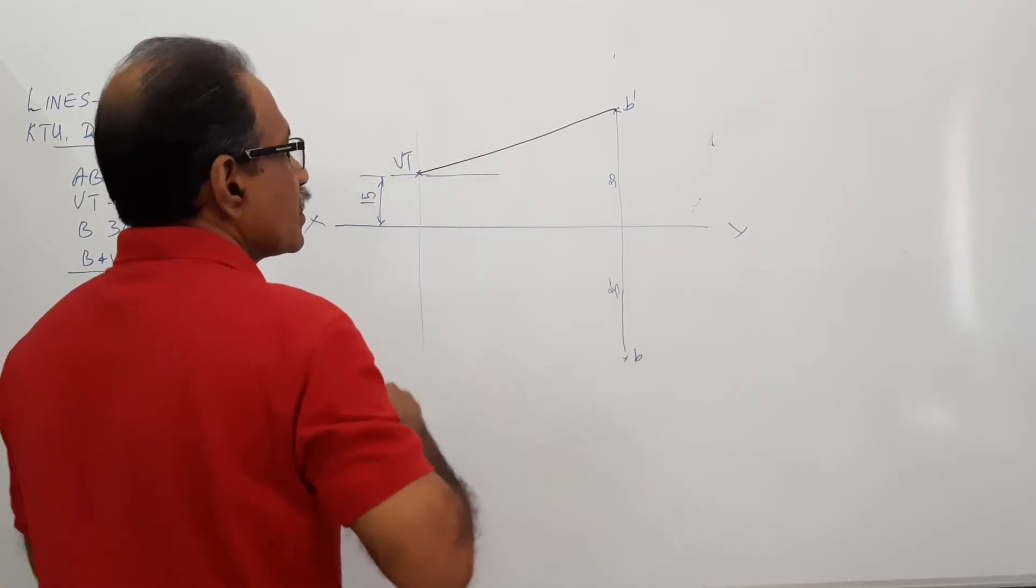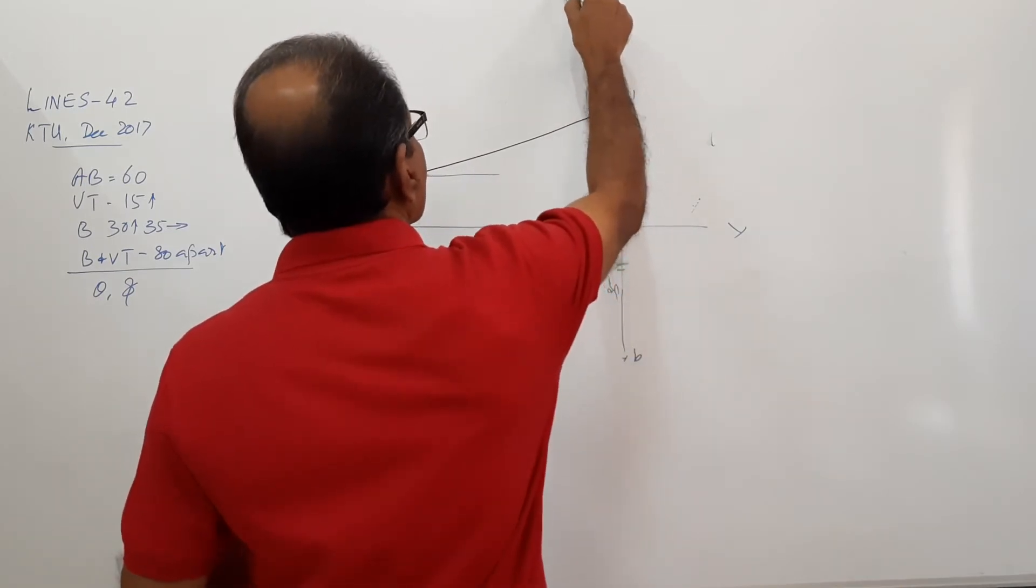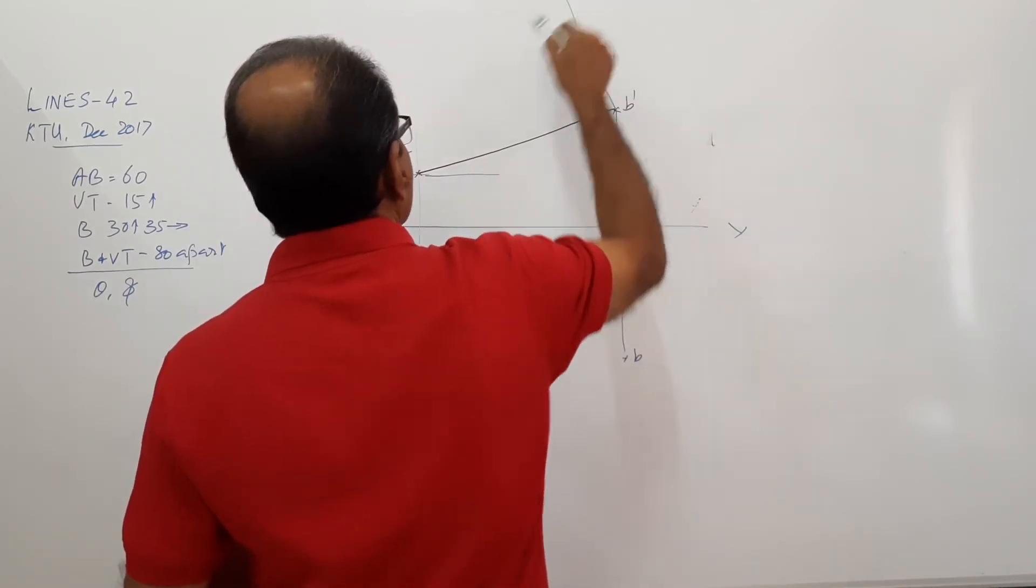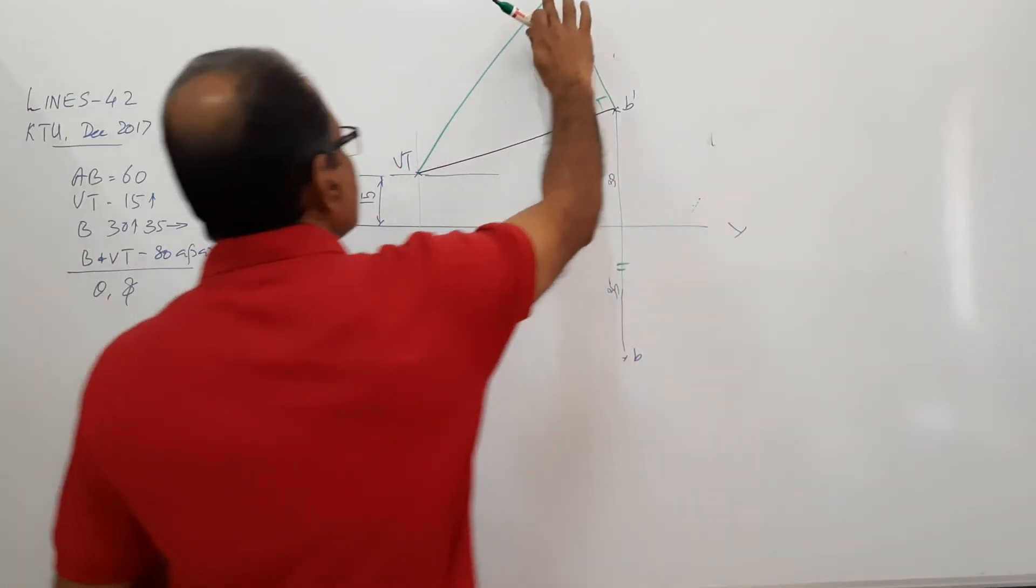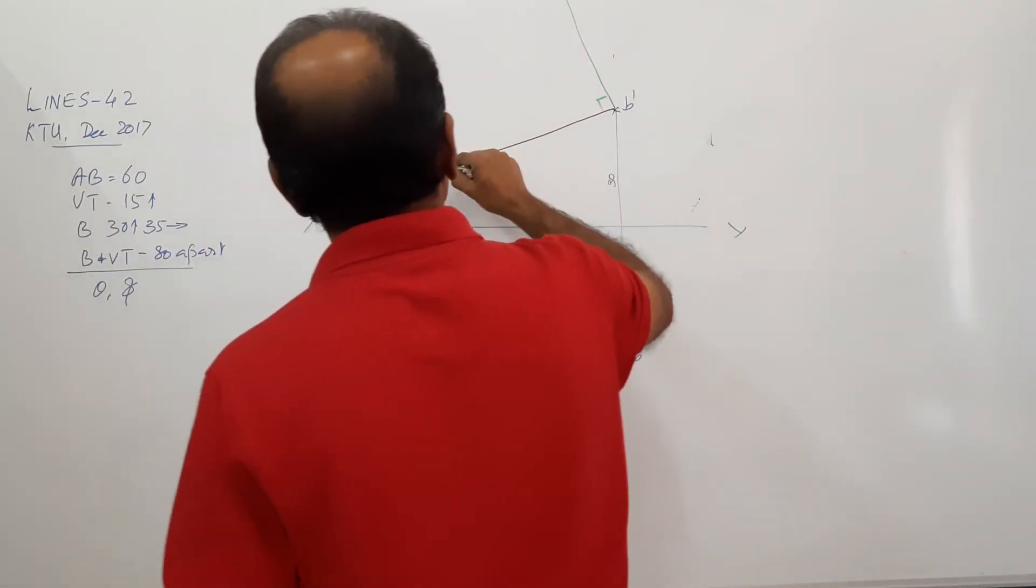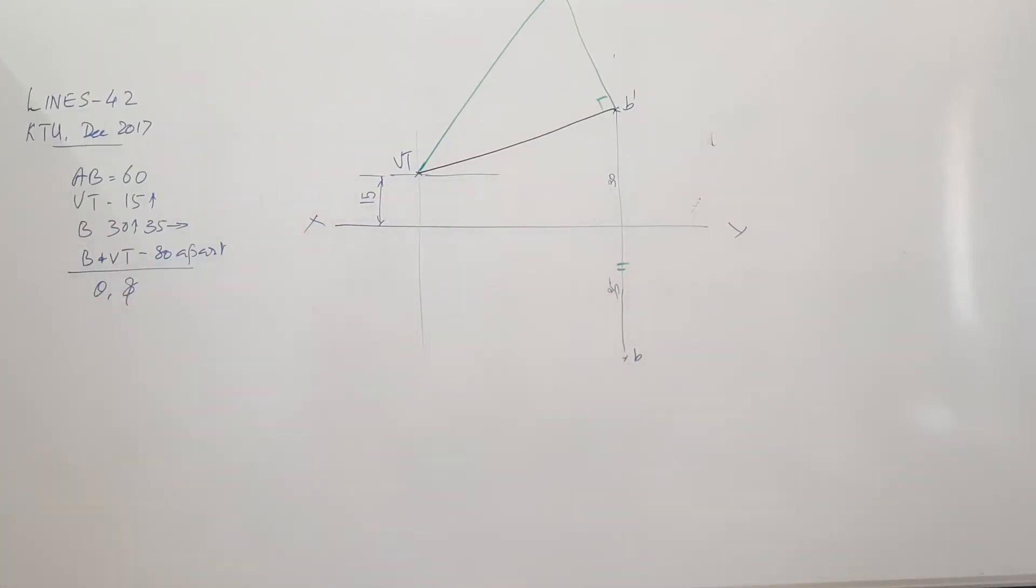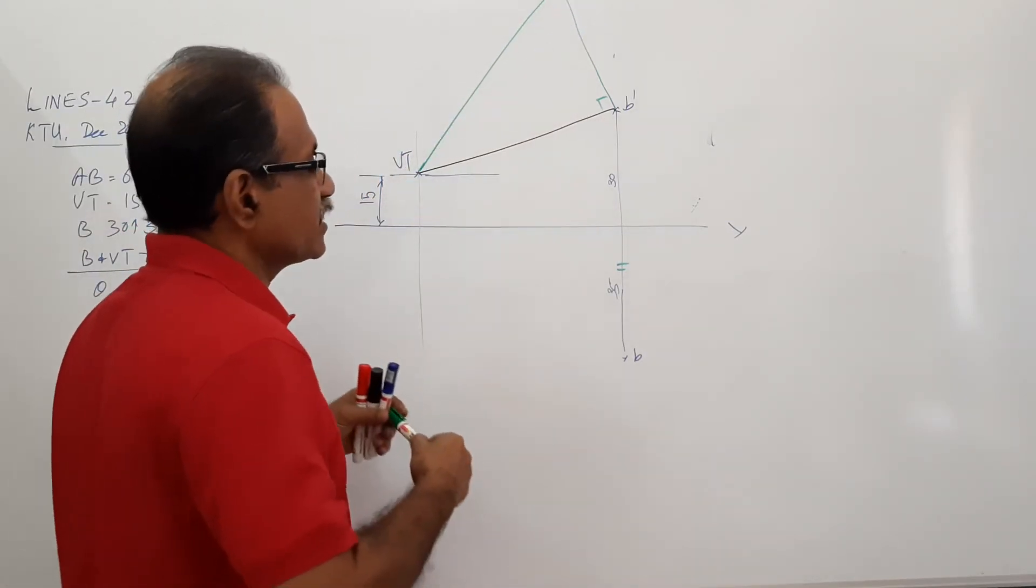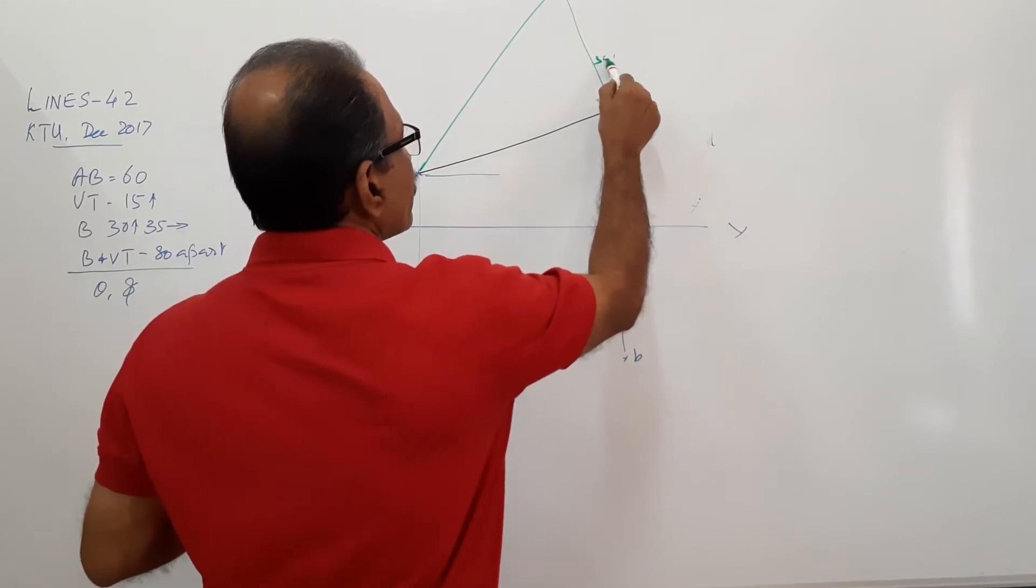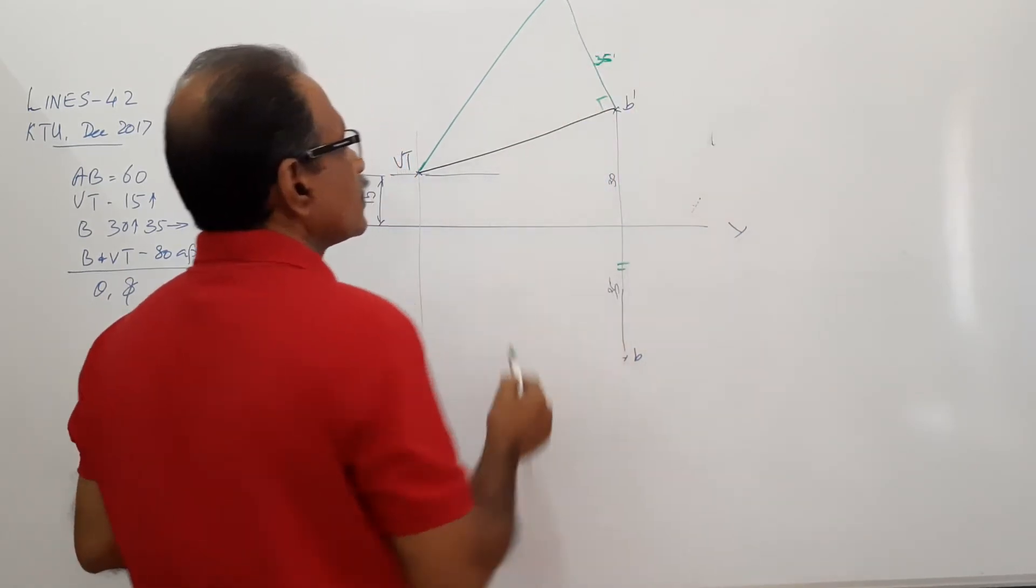Now, if you draw a perpendicular here and mark off this 35, you will get capital V1 and VT and V1 can be connected. This distance is 35. Provisional construction.